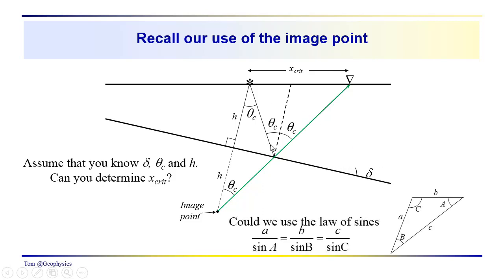Just looking at this triangle, we could use the law of sines. For this triangle, the ratio of side A over the sine of its opposite angle equals the ratio of side B over the sine of its opposite angle, and so on. So can we use that to solve this problem?